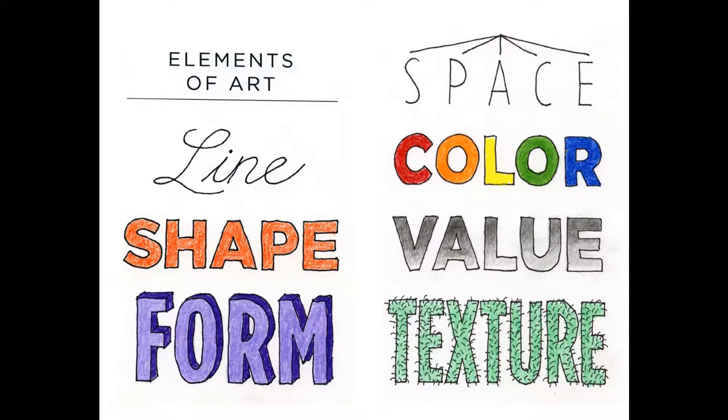There are seven elements of art: line, shape, form, space, texture, value, and color.